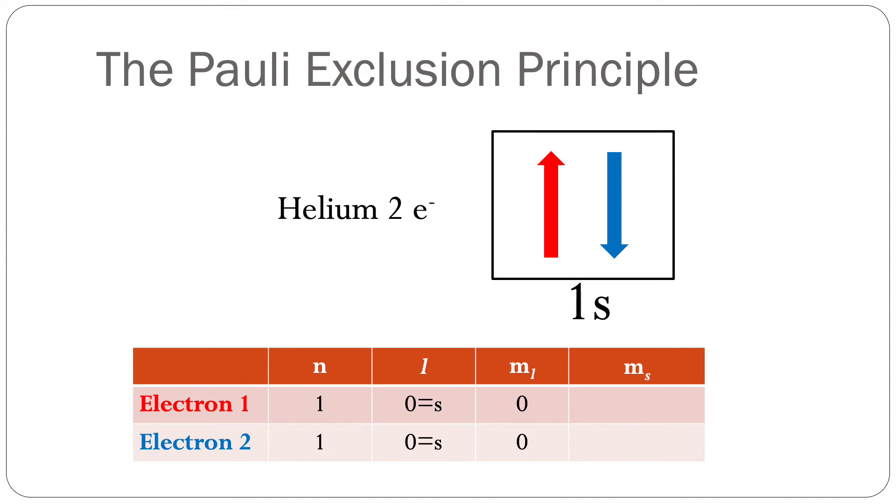I'll use helium as an example. Neutral helium in the ground state has two protons in the nucleus and two electrons. These electrons will occupy helium's 1s orbital. Notice the opposite spins.